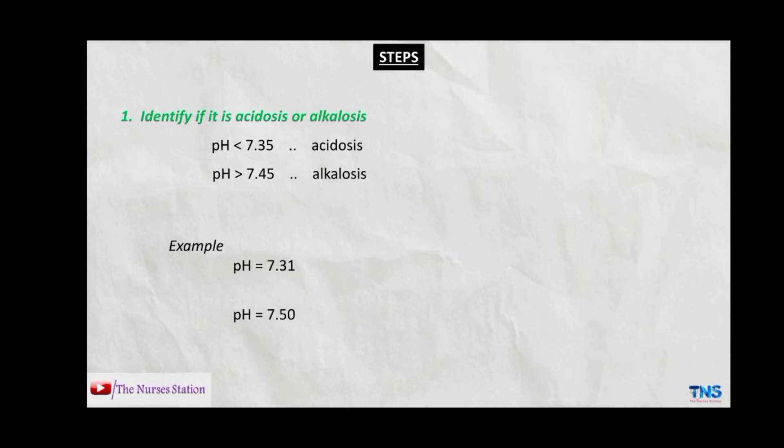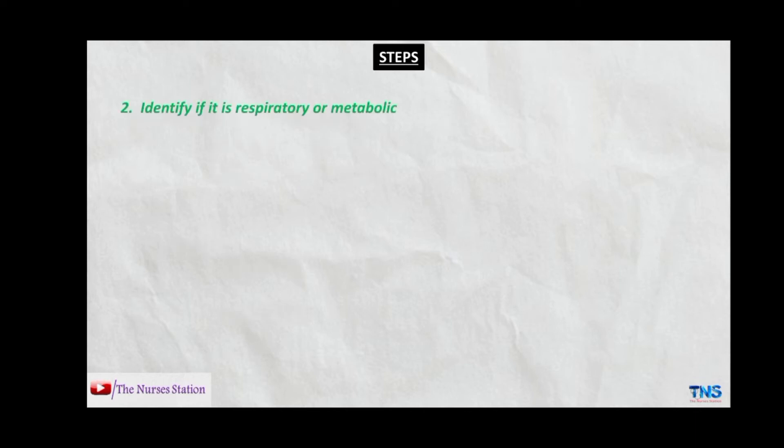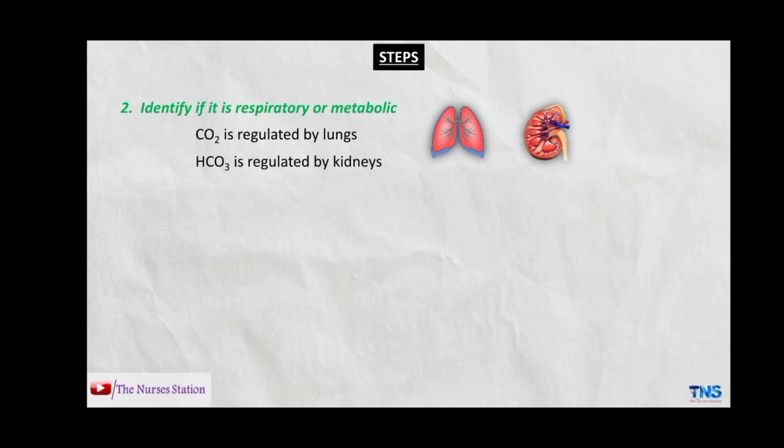The second step is to identify if it is metabolic or respiratory. The important concept to remember here is that carbon dioxide in our body is regulated by the lungs and HCO3 is regulated by the kidneys. So abnormality in the level of carbon dioxide indicates a respiratory condition, and abnormality in the level of bicarbonate indicates a metabolic condition.